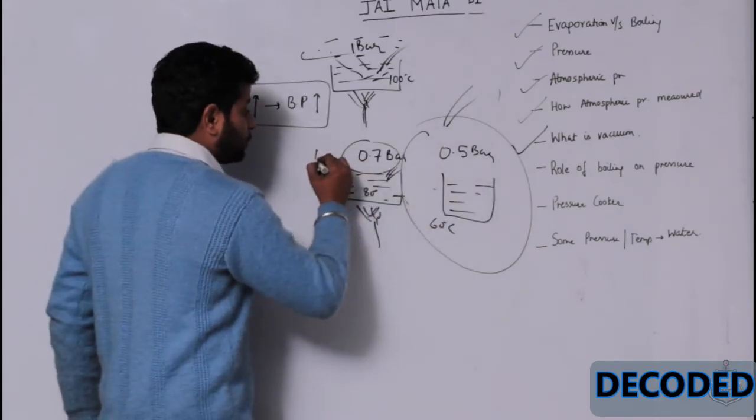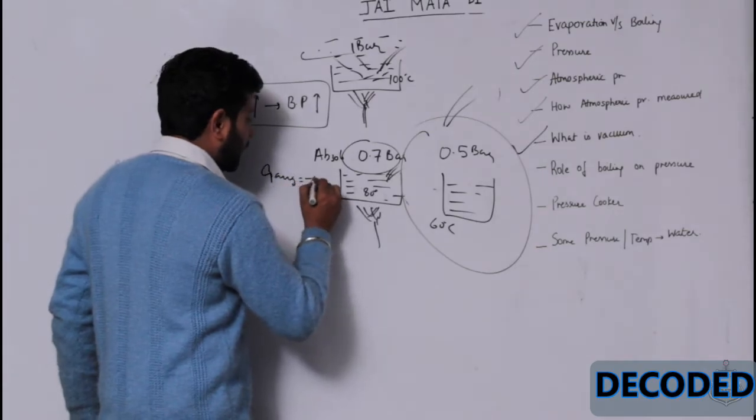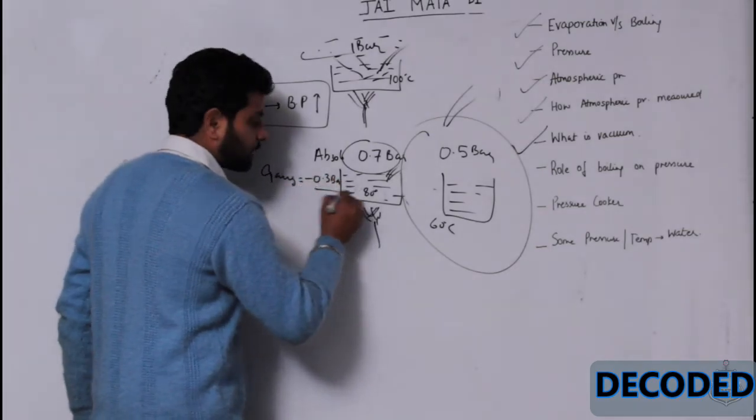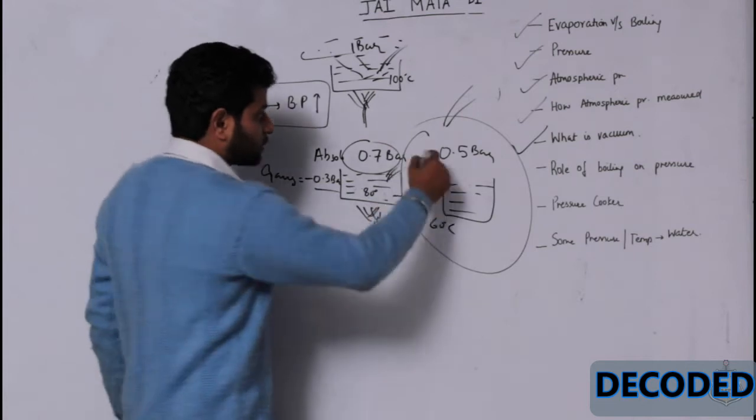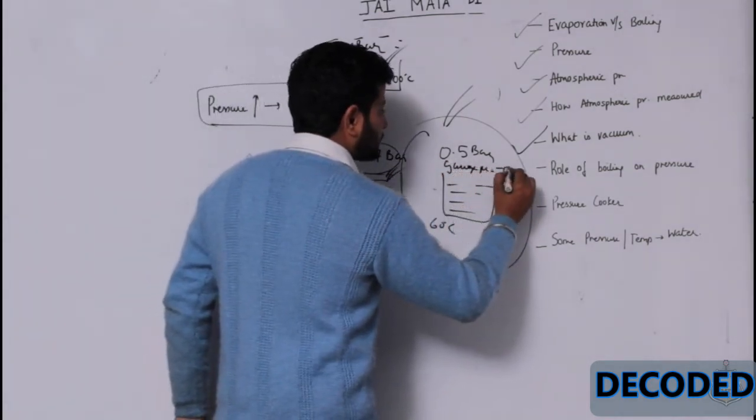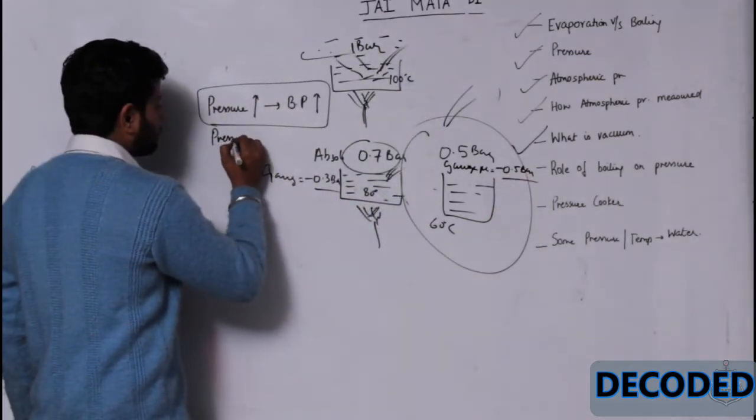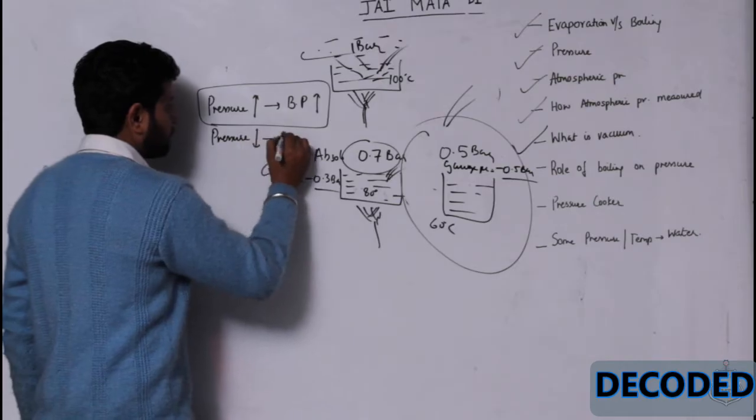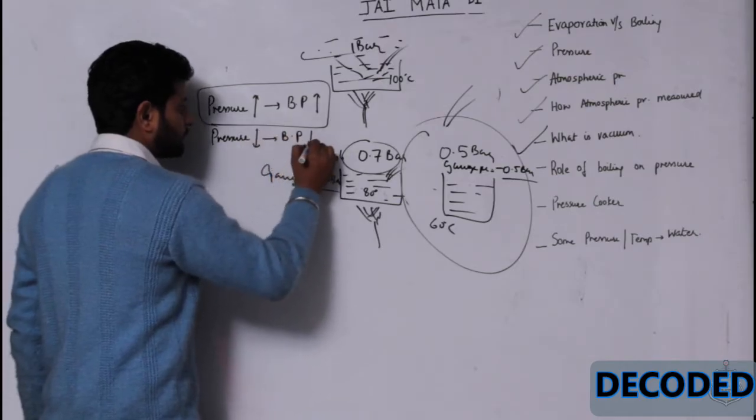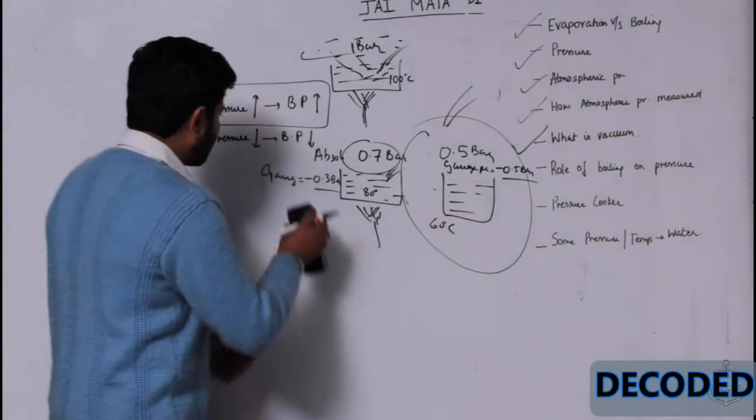This 0.7 is absolute pressure. Gauge pressure, this will show minus 0.3 bar. Right, guys? And this is going to show on gauge pressure minus 0.5 bar. So, when I decrease pressure, boiling point decreases. Clear, guys? Now, let's come to another basic.